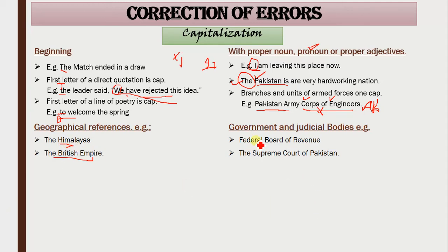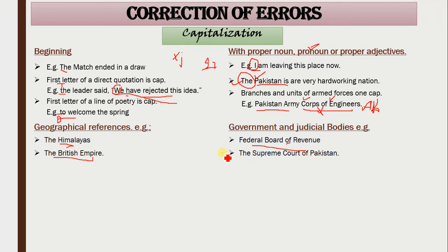For government and judicial bodies: all institutions need their first letter capitalized — for example, Federal Board of Revenue, the Supreme Court of Pakistan. Note that 'of' is not capitalized because prepositions and articles are never capitalized. Be very careful with the capitalization of institutions.